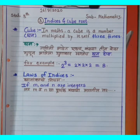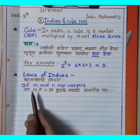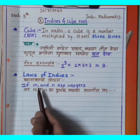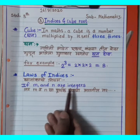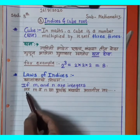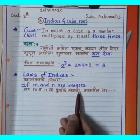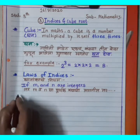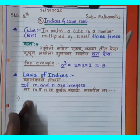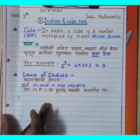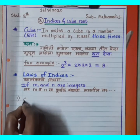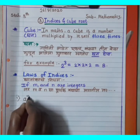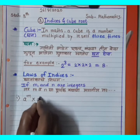You have already learned this topic in the previous standard — Standard 7. The topic of indices was covered in 7th standard. Now we will recall it. If M and N are integers, then the rules of indices (ghatan kanchi niyam) are as follows, which you learned in 7th standard.